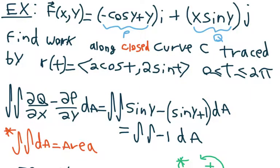If we're given f which is equal to minus cos y plus y times i or dx plus x sin y times j or dy, it's clear that our p is minus cos y plus y and our q is x sin y.